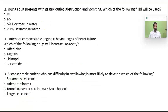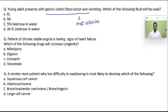A young adult with gastric outlet obstruction and vomiting — these patients can develop severe metabolic alkalosis due to volume loss and secondary hyperaldosteronism. To counter this, you should give volume. The agent that immediately repletes volume is normal saline.